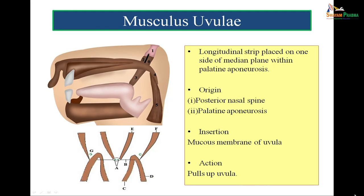Musculus uvulae arises from the posterior nasal spine and the palatine aponeurosis, and inserts into the mucous membrane of the uvula. The palatine aponeurosis splits in the center to enclose this muscle. Its function is to pull up the uvula.